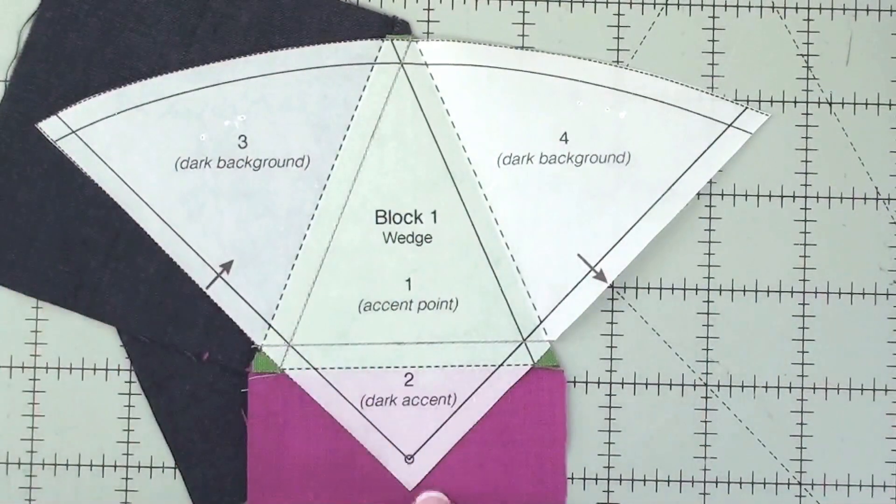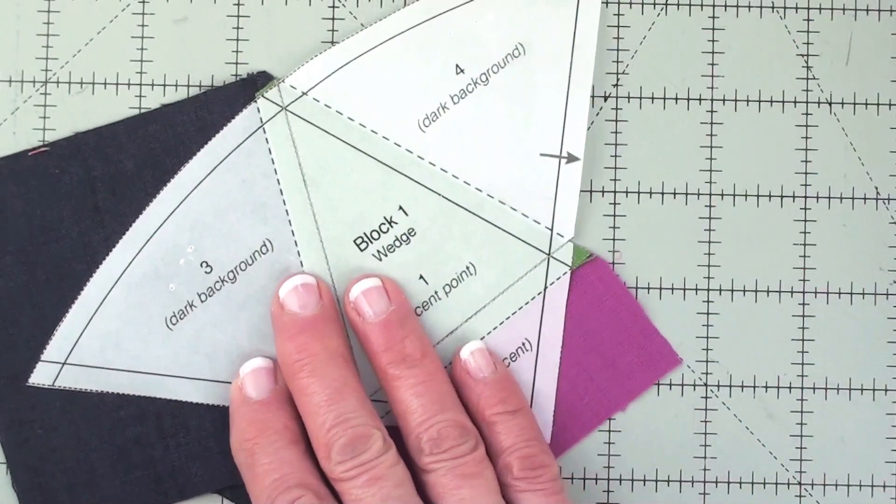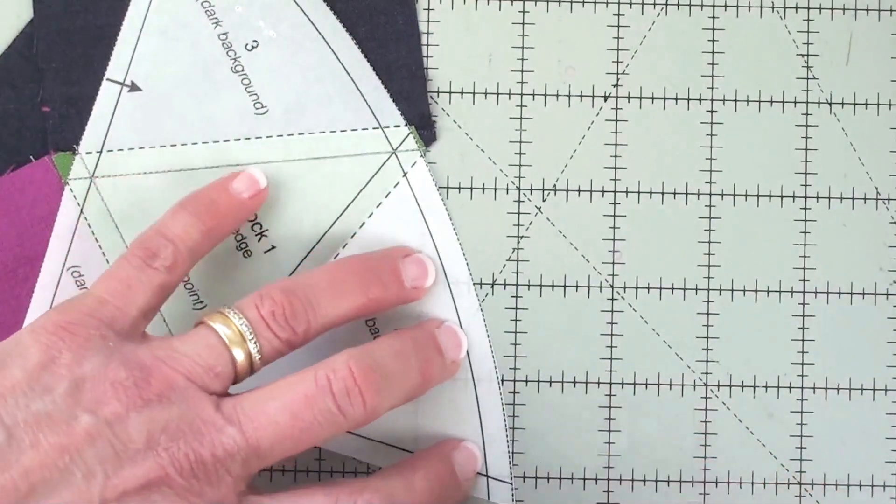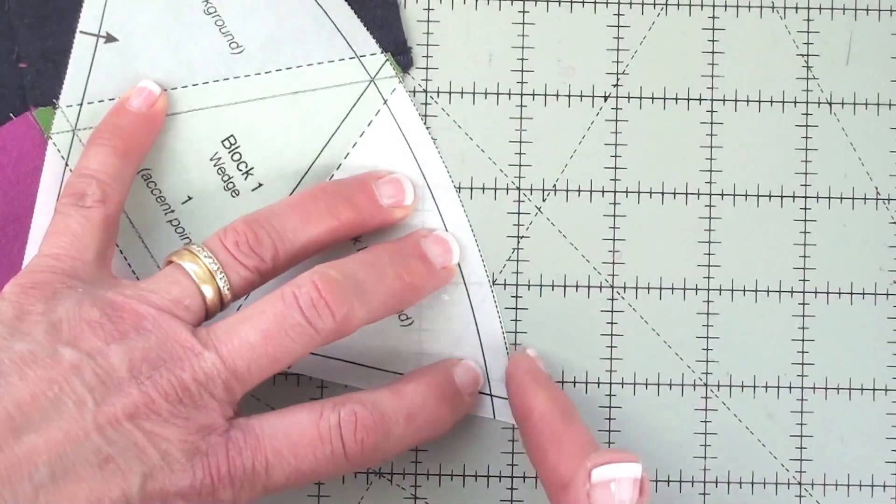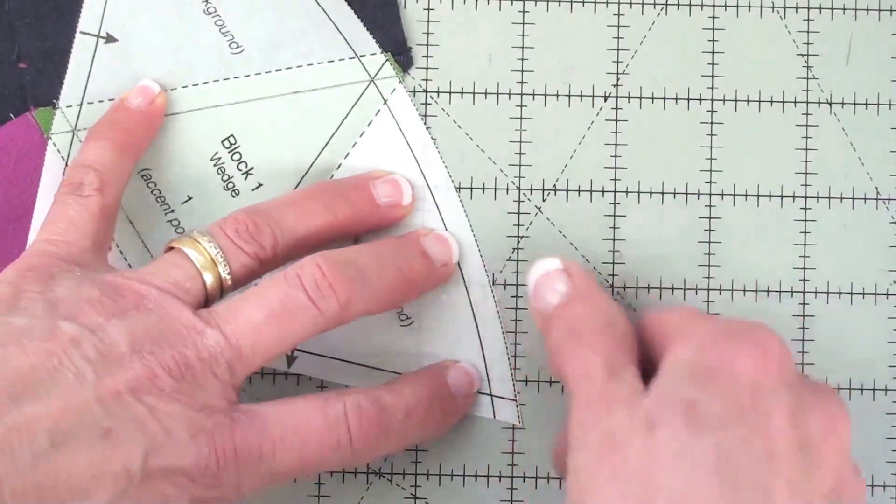Now on this side and this side you'll be able to use a ruler to trim the excess fabric away. On the rounded side you'll want to hold this carefully and cut slowly with your rotary cutter along the edge of the paper.